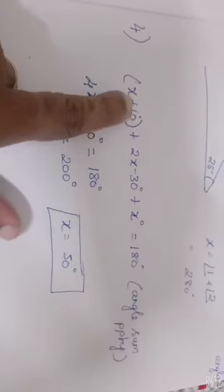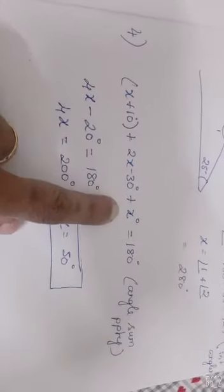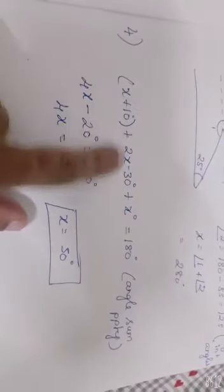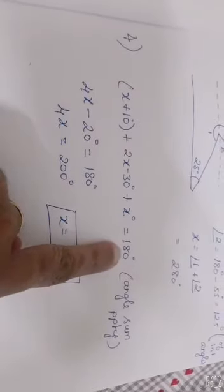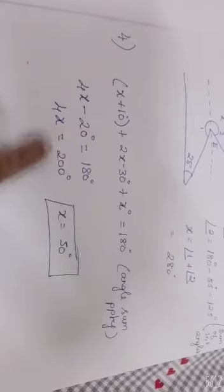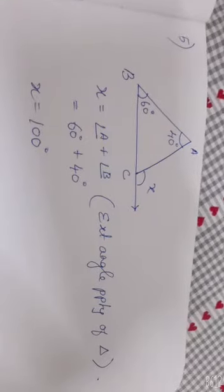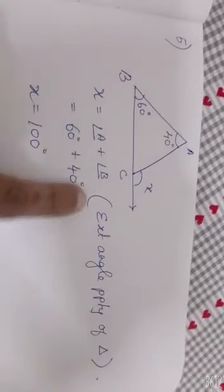The fourth sum: it is given x plus 10, 2x minus 30, and x. They are the angles of a triangle. Use the angle sum property, add all these, and the sum is going to be 180 degrees. From this, you are going to find the value of x as 50 degrees.